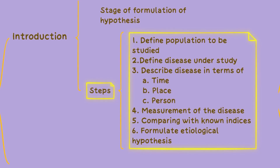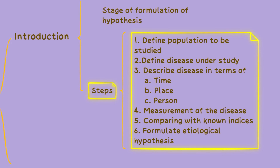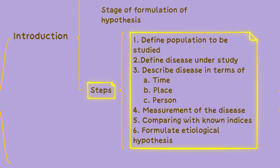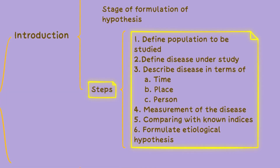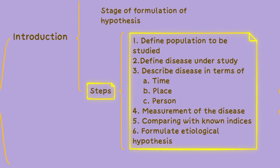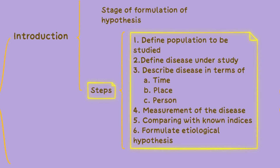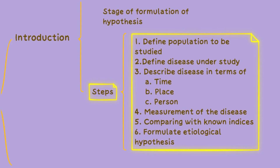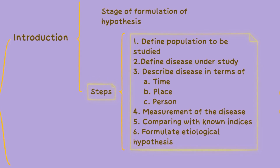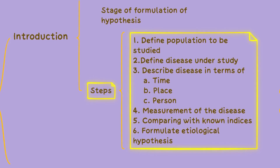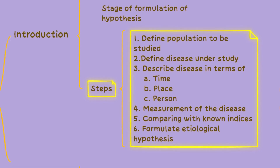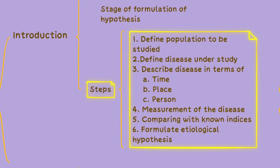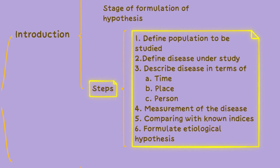Comparing the disease with known indices or benchmarks is another important step in descriptive epidemiology. This comparative analysis helps to contextualise the disease and identify any deviations or anomalies. In the last step, based on the observations and analysis conducted, researchers can formulate etiological hypotheses.